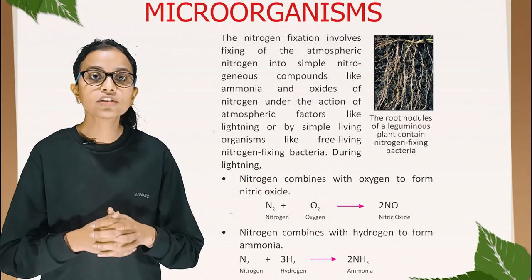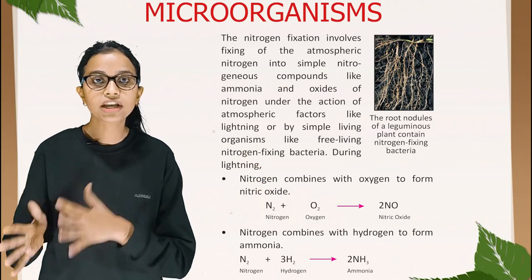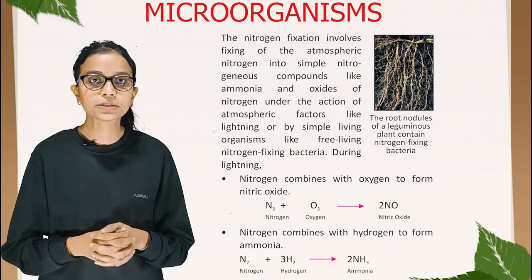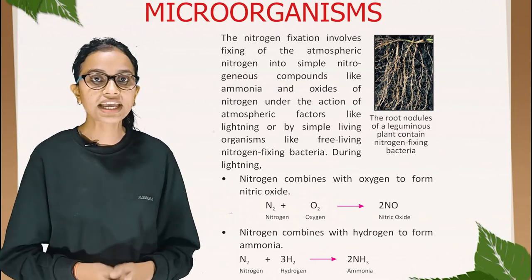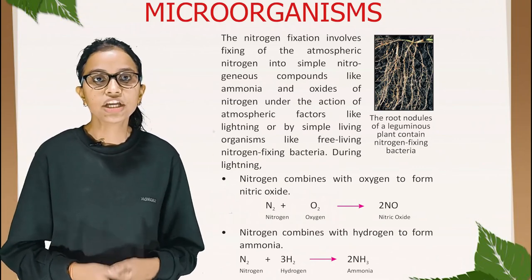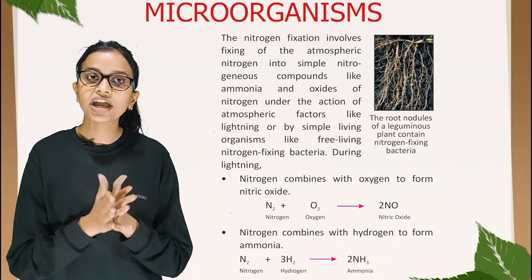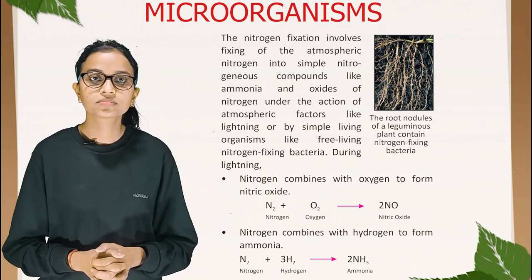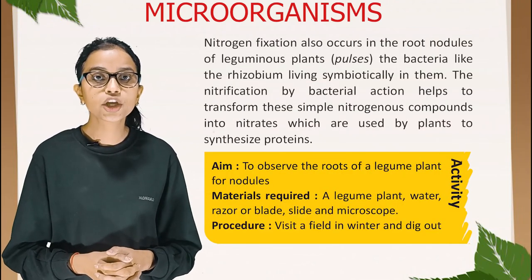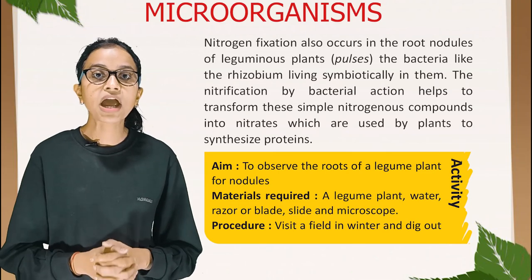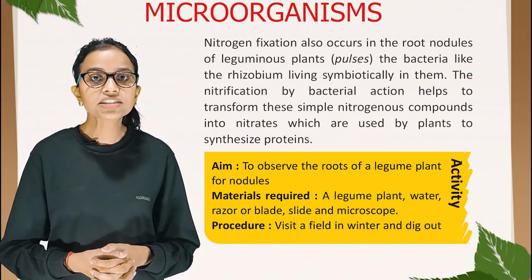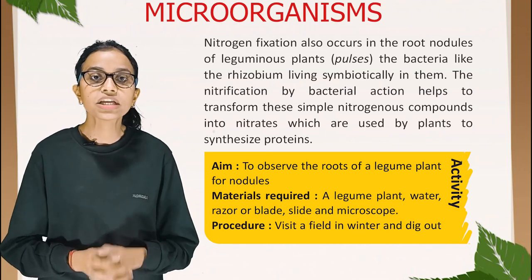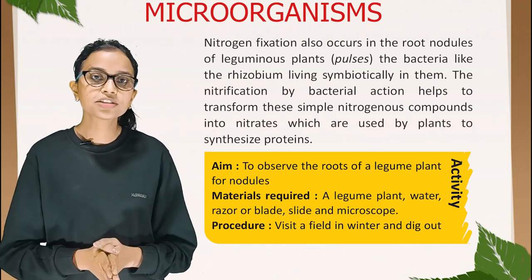Nitrogen fixation involves fixing atmospheric nitrogen into simple nitrogenous compounds like ammonia and oxides of nitrogen, under the action of atmospheric factors like lightning or by living organisms like free-living nitrogen-fixing bacteria. During lightning, nitrogen combines with oxygen to form nitric oxide, and nitrogen combines with hydrogen to form ammonia. Nitrogen fixation also occurs in the root nodules of leguminous plants (pulses) through bacteria like Rhizobium living symbiotically in them. Nitrification by bacterial action helps transform these simple nitrogenous compounds into nitrates, which are used by plants to synthesize proteins.